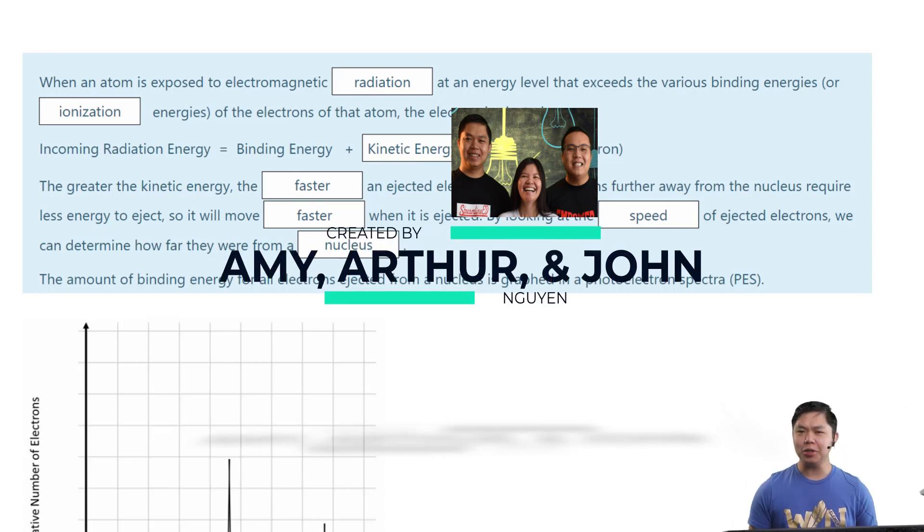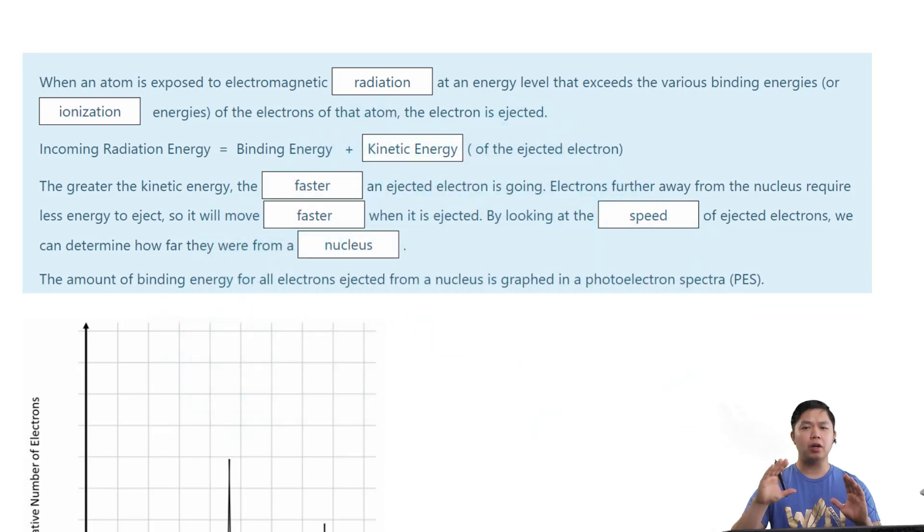Welcome back to another exciting chemistry lesson. In this lesson, we are going to look at evidence of electrons and where they are located in atoms. First of all, when we expose atoms to electromagnetic radiation, which we have control of,